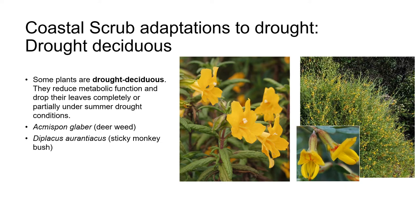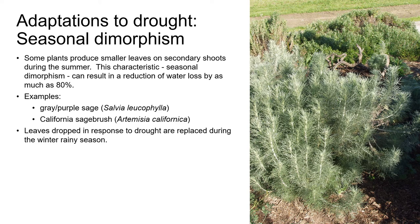Sticky Monkey Bush, Diplacus or Mimulus, doesn't lose its lower leaves, but they do die and persist on the stems, looking brown and crispy, which isn't particularly attractive in cultivated landscapes. So again, it's something to bear in mind when designing a cultivated landscape with California natives.